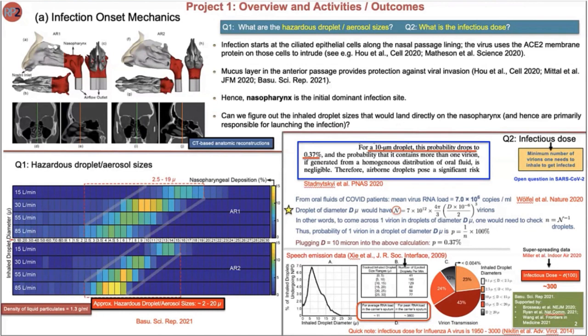Using CFD, I simulated breathing conditions for inhalation rates from 15 to 85 liters per minute, and tracked droplet sizes from 0.1 to 30 microns. Beyond 30 microns, droplets expelled by an infected host undergo prompt gravitational sedimentation and would not enter the second individual's airway. These droplets are environmentally dehydrated after being expelled. Across this size range, sizes from 2 to 20 microns showed peak nasopharyngeal delivery — what we refer to as the most hazardous droplet or aerosol size range for infection triggering.